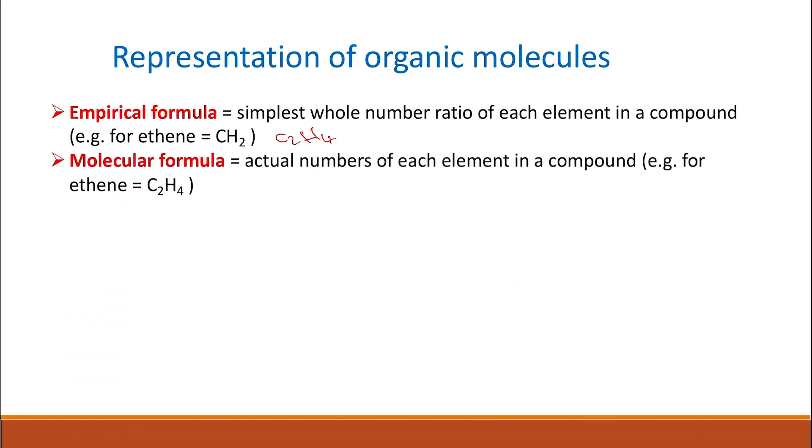And then we have the molecular formula. The molecular formula will give us the actual number of all of the atoms in the molecule. So for ethene, which is C2H4, it's going to be C2H4 because it has two carbons and four hydrogens.